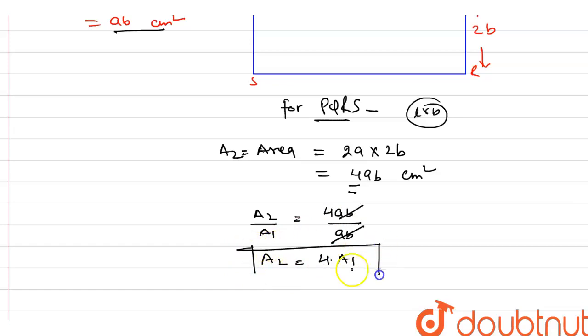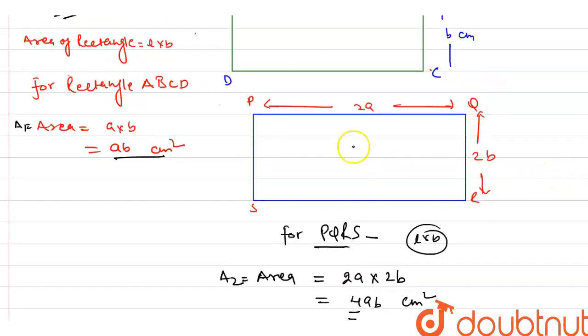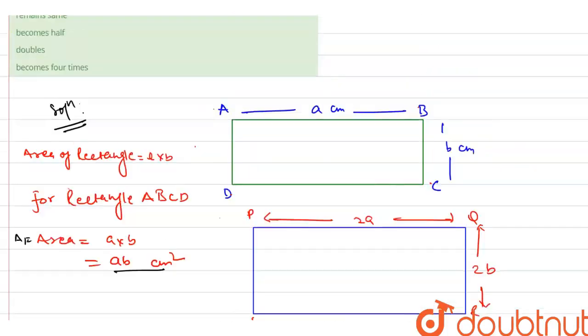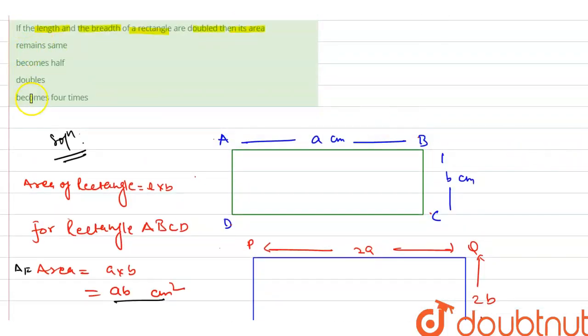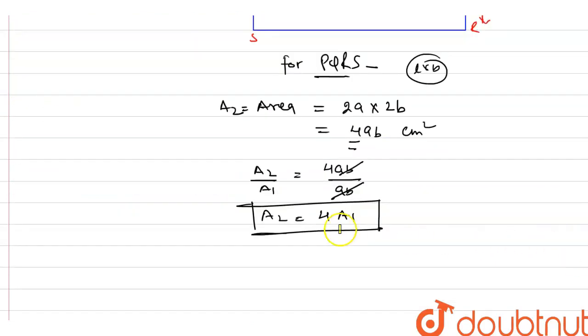So from this calculation, we can easily say that if we will double the length and breadth of any rectangle, we have an increase of 4 times in area. Come to check the option. Let's check the option, and this is given becomes 4 times and this will be our answer. Thank you guys. This is our answer.